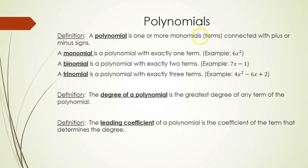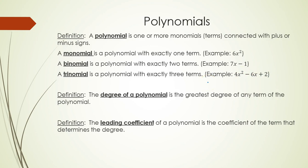Monomial identification is important because that's what polynomials are made of. A polynomial is more than one monomial or term connected with a plus or minus sign. A monomial is just one term — 6x squared is an example. A binomial is two terms — 7x minus one is an example. A trinomial is three terms — 4x squared minus 6x plus 2 is an example.